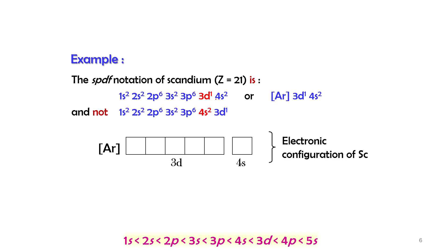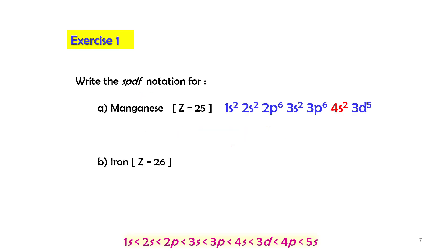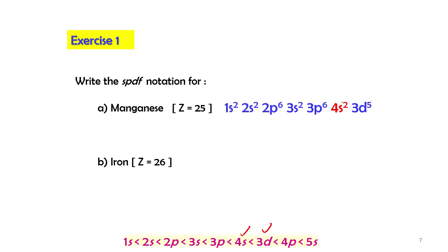After filling electrons, the filled 3d orbital has lower energy compared to filled 4s. For manganese with Z=25, we follow the same principle — fill electrons into 4s first, then into 3d. Remember the 18-electron argon core.